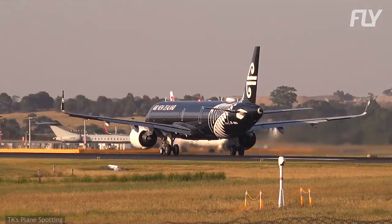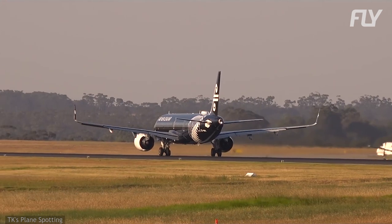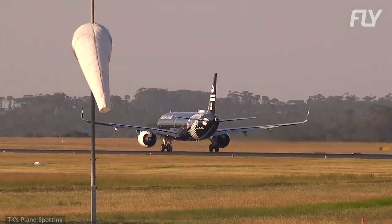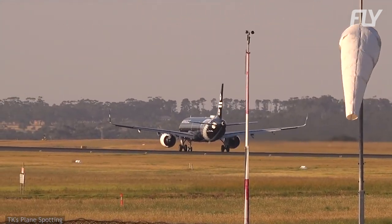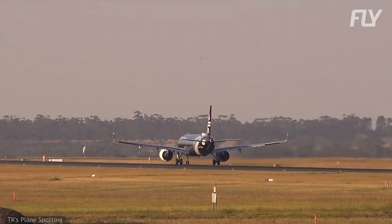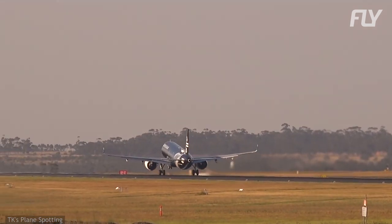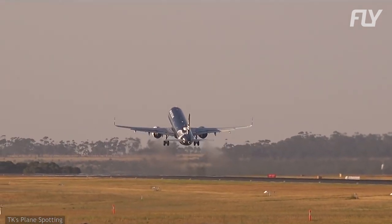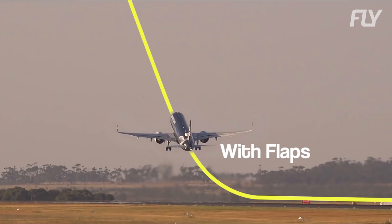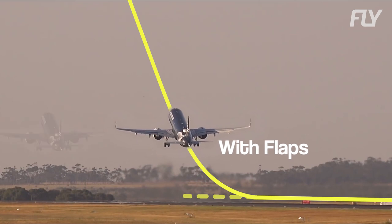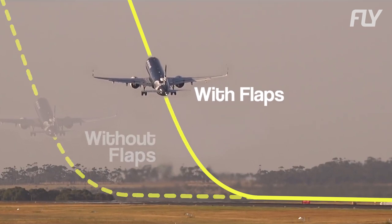So why do we want the plane to produce the same amount of lift with a lower speed? Two instances where this is ideal are takeoff and landing. During takeoff, the additional lift from the flaps will help the plane reach the minimum amount of lift needed to start flying faster, hence reducing the length of runway needed.